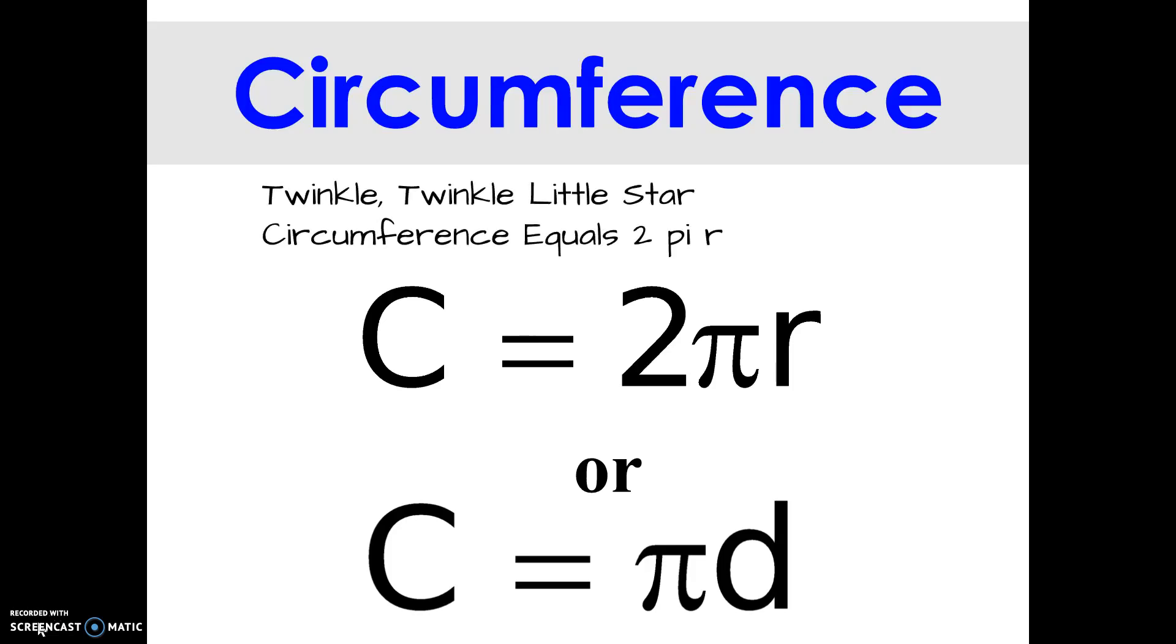There's one way to help you remember it if you would like to. Twinkle, twinkle, little star. Circumference equals 2 pi r. I know you're singing it.